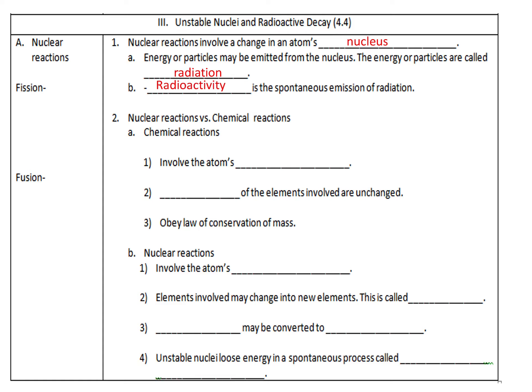If we compare nuclear reactions and chemical reactions, we'll talk more in the year, mostly, about chemical reactions. Those reactions are going to involve the atom's electrons. The identity or the nucleus of those elements involved are unchanged. It's just going to be reactions with especially valence electrons. Chemical reactions are going to obey the law of conservation of mass.